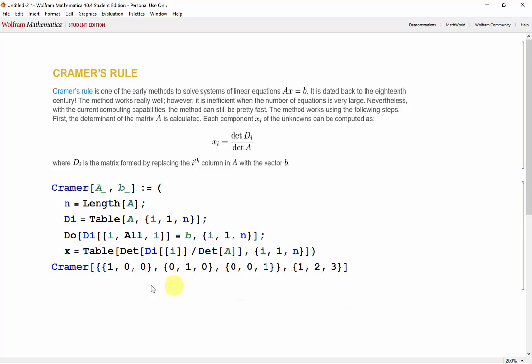And because this is the identity matrix, we expect 1, 2, and 3 as our output. Now let's see if that works.